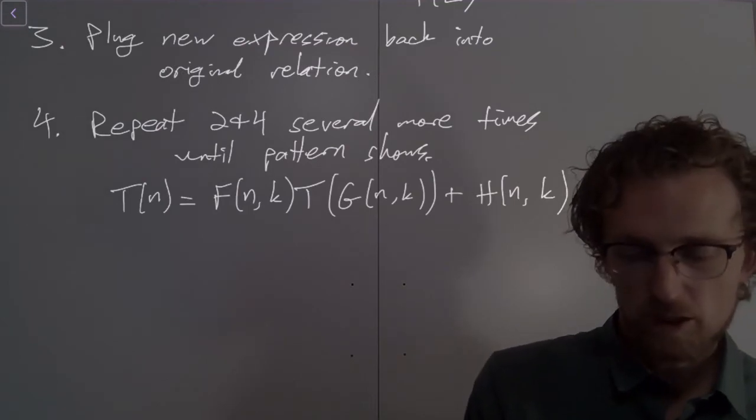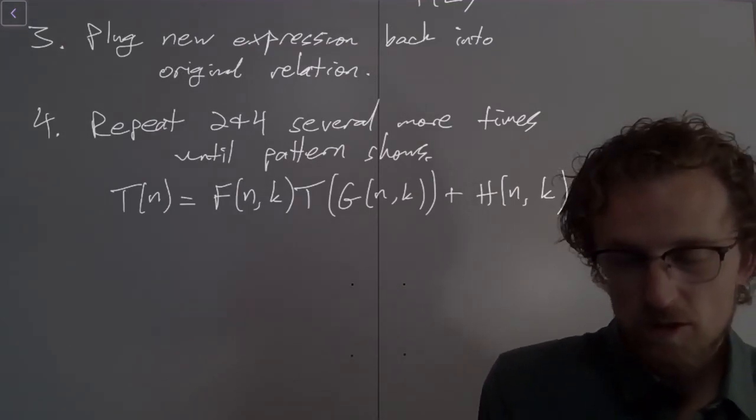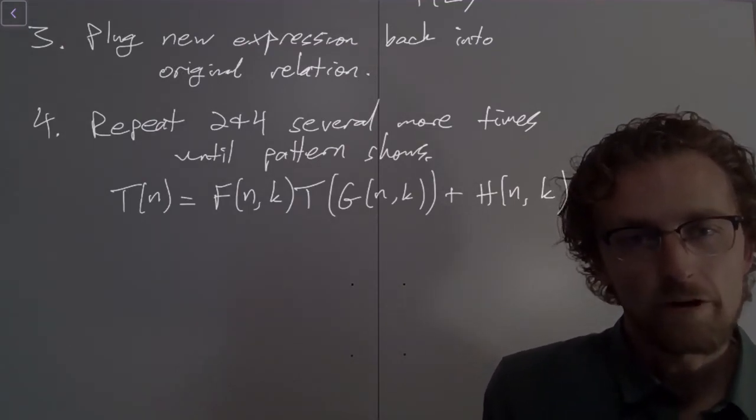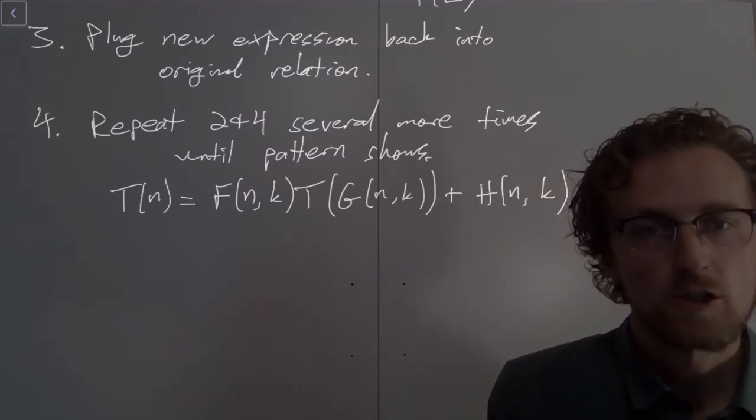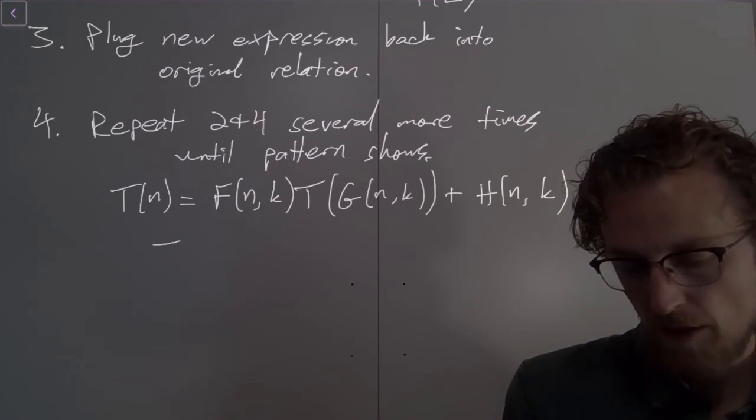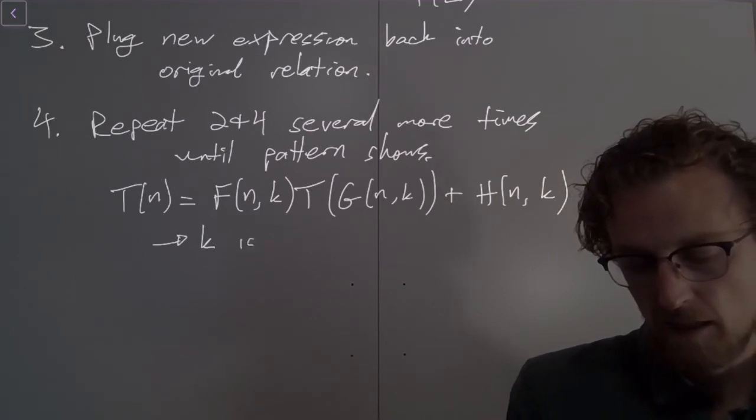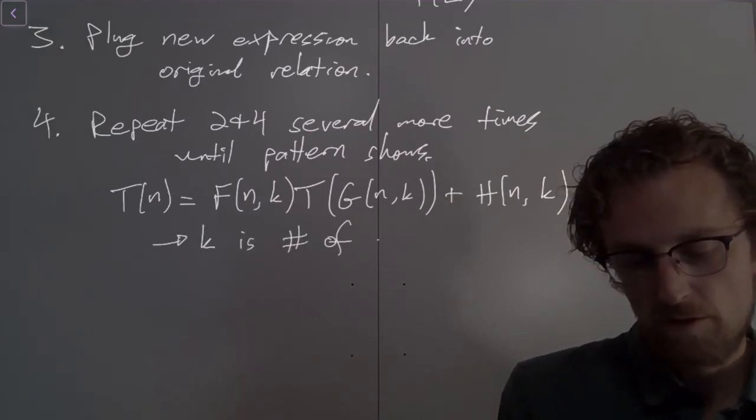We're looking for a way to express T(n) in terms of some function of n and k where k represents the number of recursive calls so far. Okay, with this, k is the number of recursive calls so far.